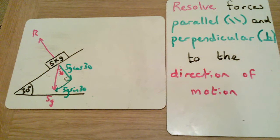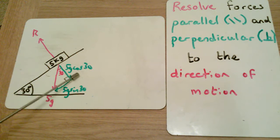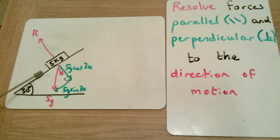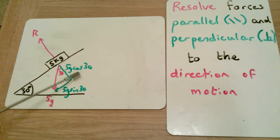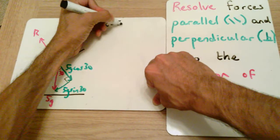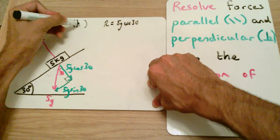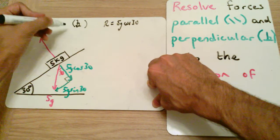Only one of these components causes the block to move down the slope — that is the 5g sin 30 component. The other force, 5g cos 30, must be equal to the reaction force R, because the particle is not going to come off the surface or sink into it — it simply moves down the slope, meaning these perpendicular forces must be balanced. So R = 5g cos 30.